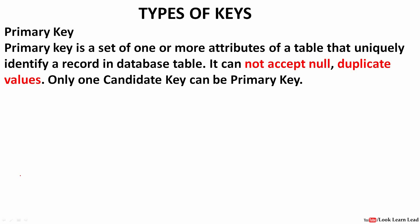The first type of key is the primary key. The primary key is a set of one or more attributes — it can be a single attribute or a set of attributes — of a relation that uniquely identifies a record in a database. For example, suppose we have a student database. Which attribute of the student would uniquely identify a student? It would be either the roll number or the registration number. So the roll number or the registration number would be the primary key.